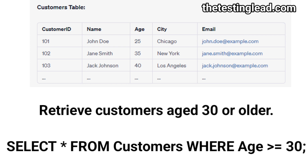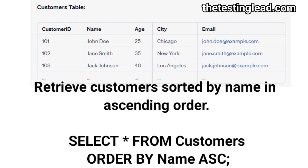Retrieve customers age 30 or older: SELECT * FROM Customers WHERE age >= 30. Retrieve customers sorted by name in ascending order: SELECT * FROM Customers ORDER BY name ASC.